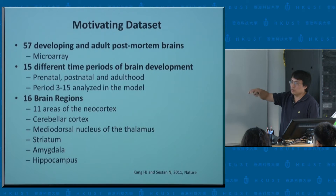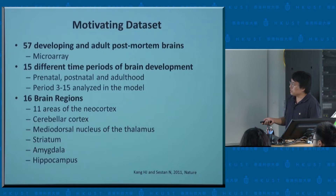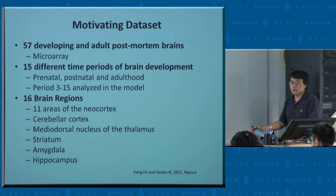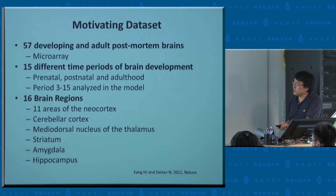This is a pretty interesting dataset — you have spatial patterns across different brain regions and temporal patterns across developmental stages. In their initial analysis, they would look at one region or one time point at a time. Even though there are about 200+ microarray datasets in total, each particular time point or region may have only 2 to 5 samples. If you just analyze one time point and one region, the information is pretty limited. They felt there must be some way of borrowing information across time points and across different brain regions.